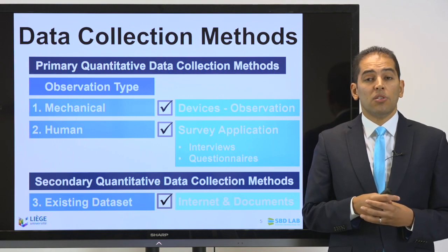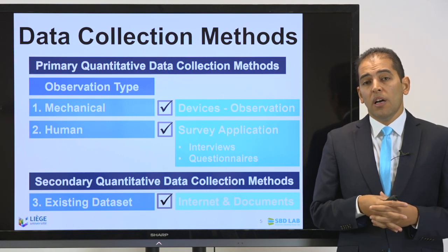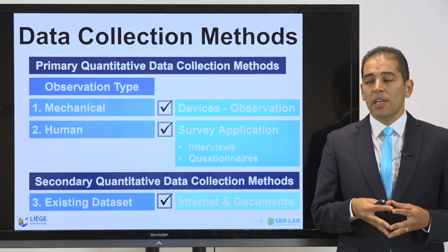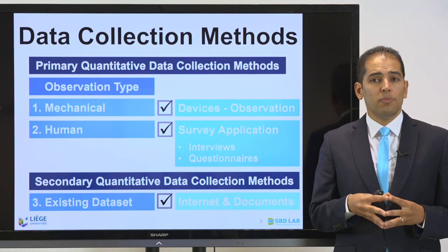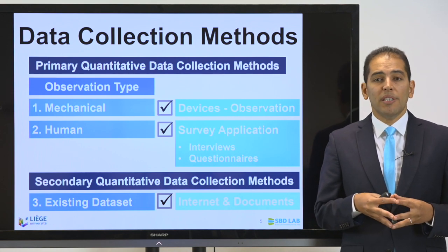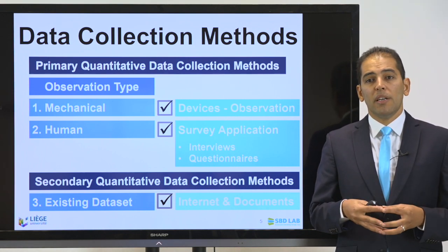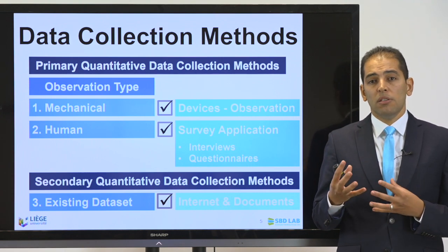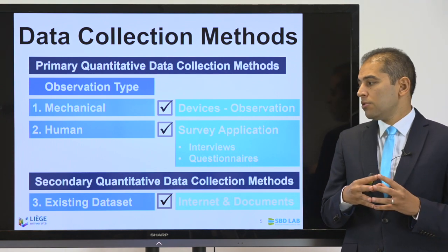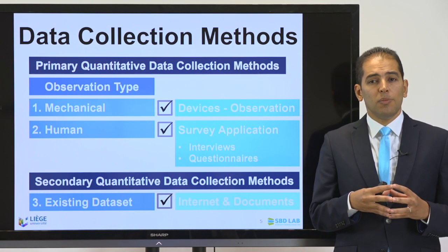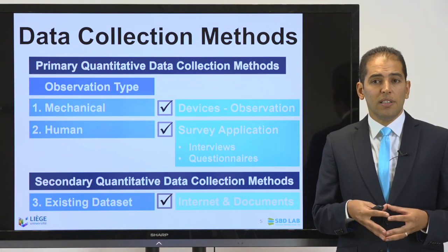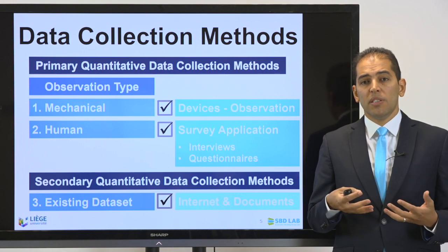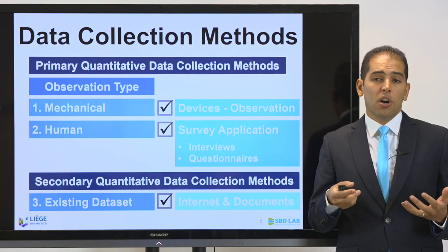I need to remind you that there are two types of primary data collection methods: the primary quantitative data collection method and the secondary quantitative data collection method. Primary data means observations done through mechanical devices or through humans, through surveys, interviews, or questionnaires. Secondary quantitative data collection refers to data found in datasets available online, in physical repositories, or in archives.